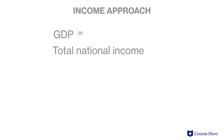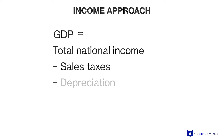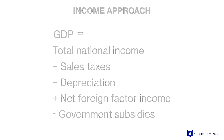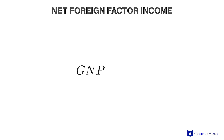The equation to calculate GDP using the income approach is: total national income plus sales tax plus depreciation plus net foreign factor income minus government subsidies. This sounds complicated, but the equation for net foreign factor income is simply GNP minus GDP.